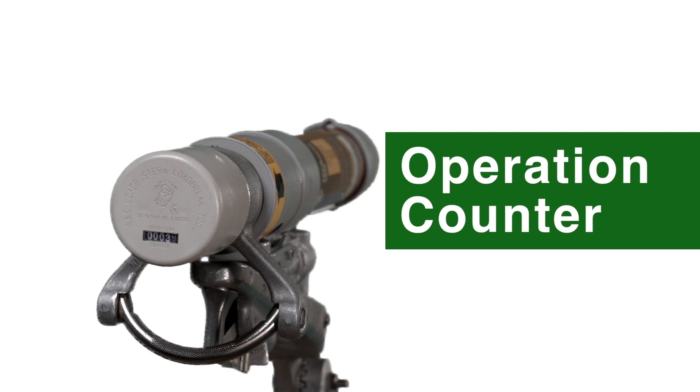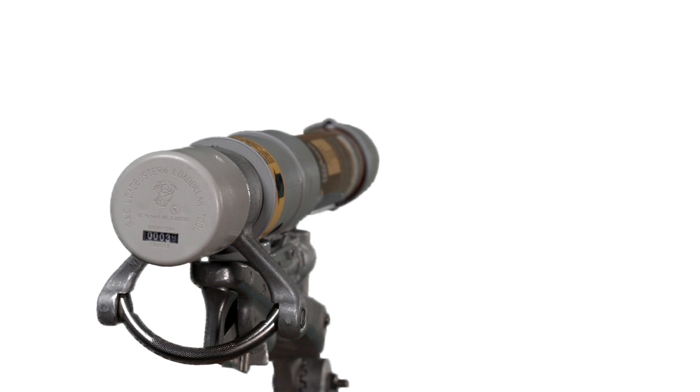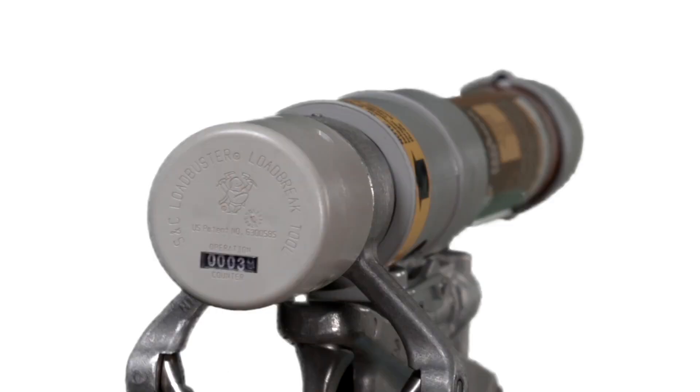Loadbuster tools manufactured after March 2003 are equipped with a non-resettable operation counter that lets you monitor the use of your tools to make more informed decisions with regard to inspection and maintenance. The operation counter is built into the Loadbuster tool's silencer and can be easily added to existing tools.